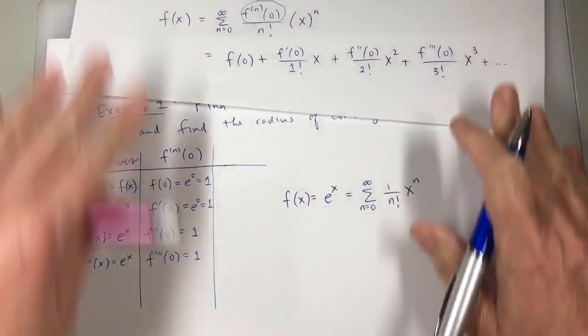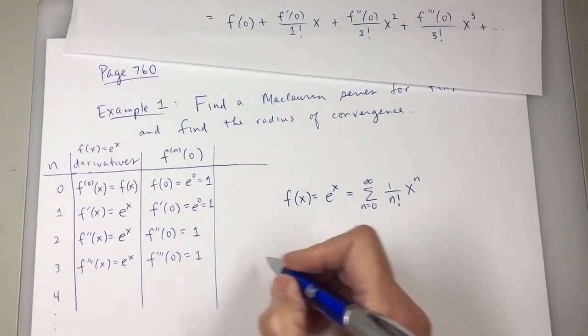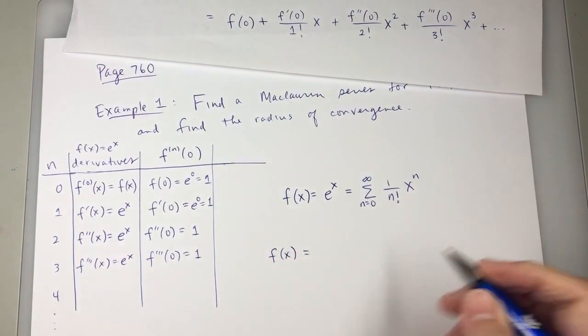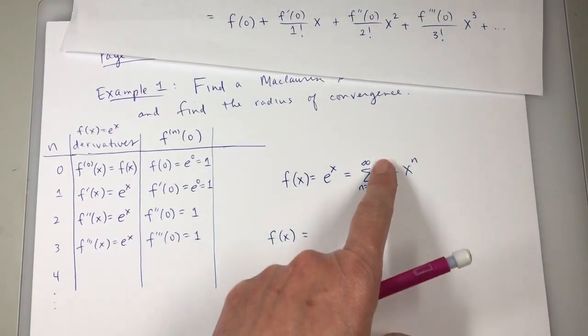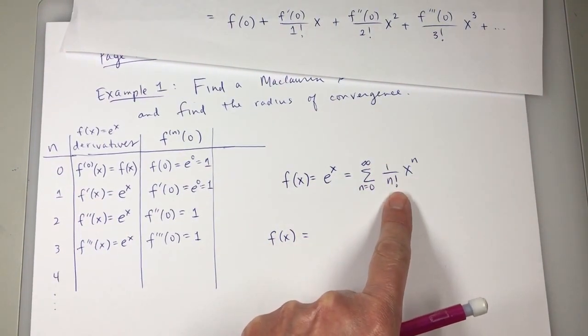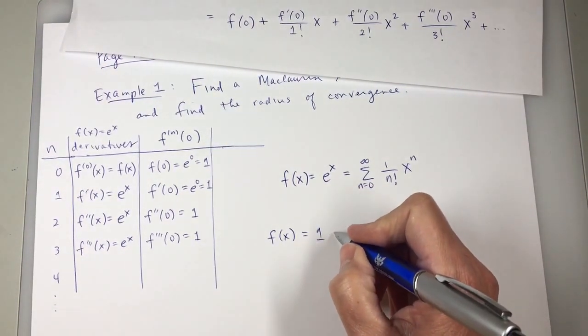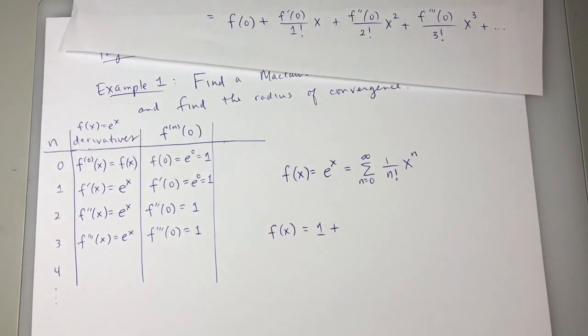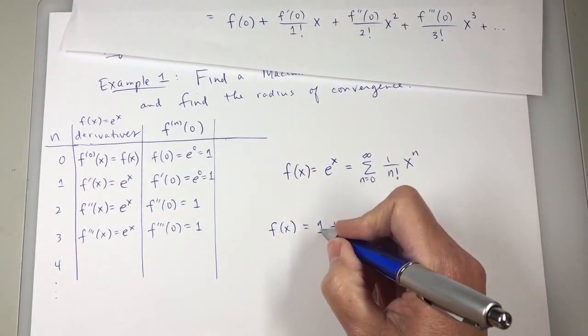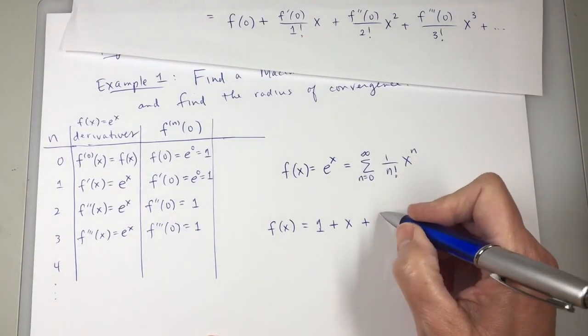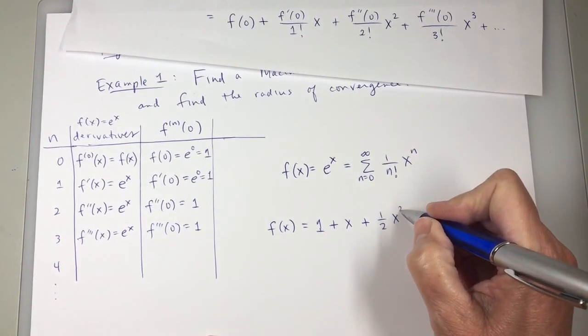And I can write out a few terms for this. So f(x), I can write it out. When n is zero, this is 1 over 1 times 1. It is 1. When n is 1, what's my term going to be? x. When n is 2, 1 half x squared.